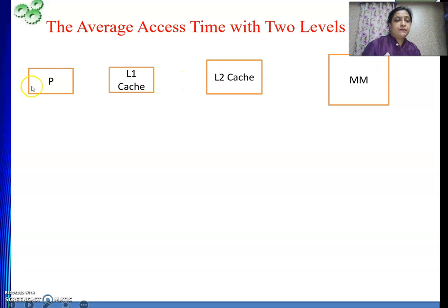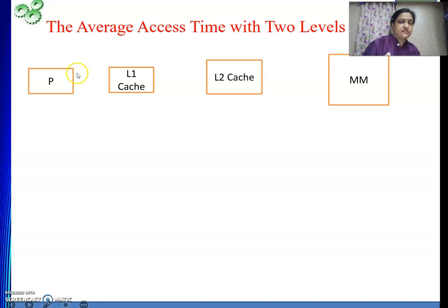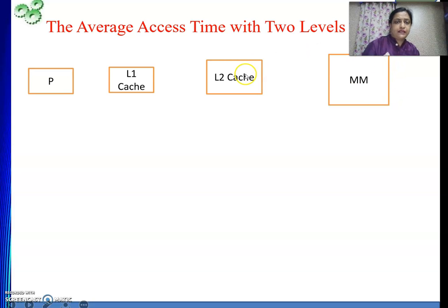Whenever the processor accesses something, it will get it from L1. If it is not found in L1, it will get it from L2 and give it to L1, then to the processor. If it is also not found in L2, then it will be obtained from main memory to L2, then L1, then given to the processor. This is how it works.